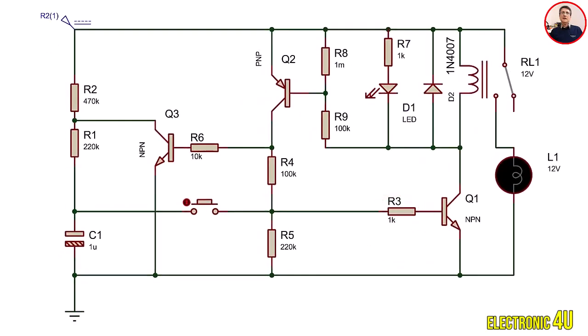Now, one thing remains. How do we supply the base voltage to transistor Q1 when we release the button? Well, when we release the button, the base voltage of transistor Q1 is supplied through another transistor called Q2, which is a PNP transistor.